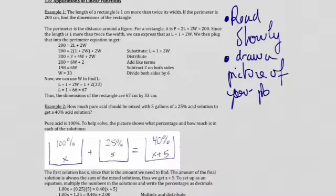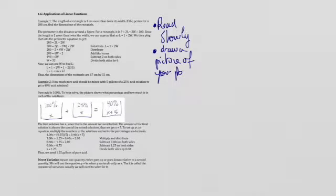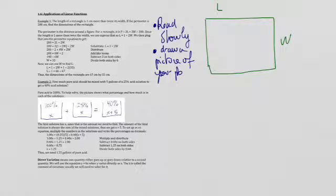So now, let's do the second advice I gave you, which is trying to represent a picture of your problem. Obviously, what I want to do is I want to represent a rectangle. This rectangle is defined with a width and a length. And they are telling me that the length of a rectangle is 1 cm more than twice its width. So, that means my length is equal to 2 times the width plus 1. Okay? 2 times the width plus 1.